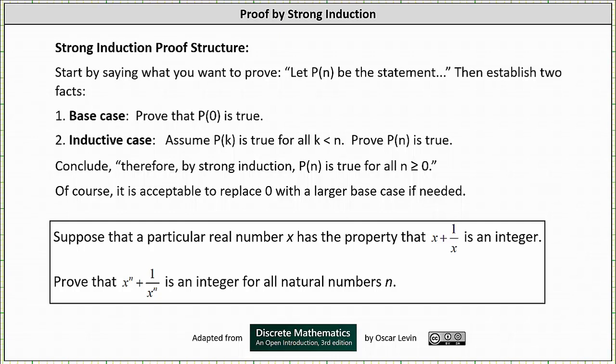We start by saying what we want to prove. For example, let p of n be the statement and so on, then establish two facts. Number one, the base case: we prove that p of zero is true. And number two, the inductive case: we assume p of k is true for all k less than n, and we prove p of n is true. Therefore we conclude by strong induction p of n is true for all n greater than or equal to zero. Of course, it is acceptable to replace zero with a larger base case if needed.